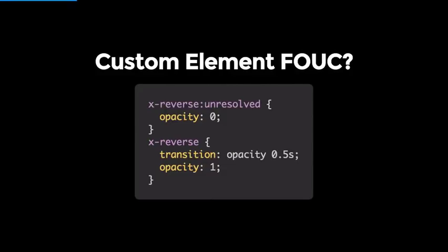There's also a new CSS pseudo-class called unresolved. If a custom element takes a while to render — maybe it's doing a lot of network calls — it will flash and then bootstrap itself up with different styles. One strategy is to set the opacity to zero using the unresolved pseudo-class, and then once createdCallback fires you can transition it in so you don't get that flash of unstyled content.